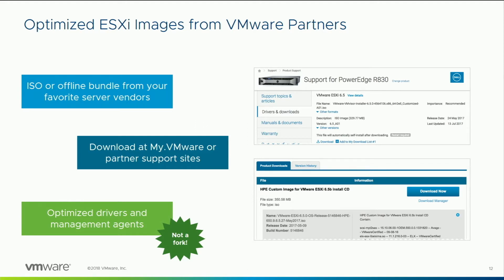Start with the HPE image, add the latest VMware patch and maybe some other third-party driver to support a device you need, create an image out of all that, and you're ready to go. If you're going to do that, keep in mind you don't want the ISO file — you want the offline bundle, which is a zip file. Identical contents, just two different delivery vehicles depending on your workflow. If you're going to make your own custom image, start with the zip file.